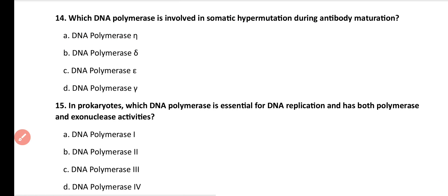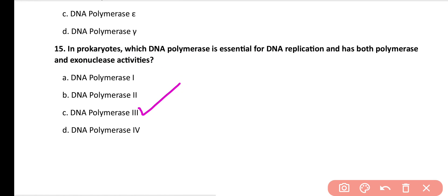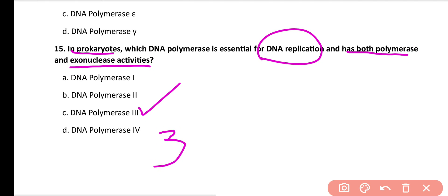Question number 15. In prokaryotes, which DNA polymerase is essential for DNA replication and has both polymerase and exonuclease activities? DNA polymerase 1, 2, 3, or 4? Correct answer is option C. DNA polymerase 3 in prokaryotes is essential for DNA replication and has polymerase activity in the 5 to 3 direction and exonuclease activity in the 3 to 5 prime direction.